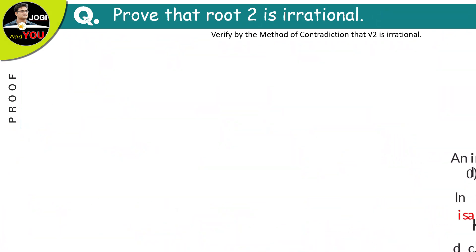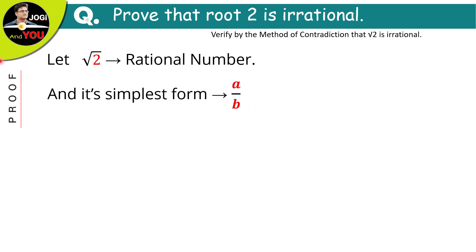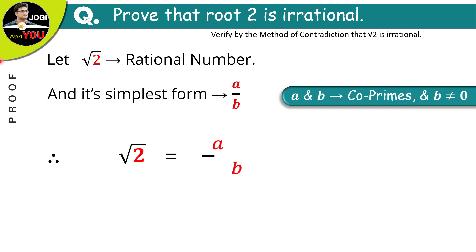So, let us assume that root 2 is a rational number and its simplest form will be a over b, where a and b both are co-primes and denominator b cannot be equal to 0.